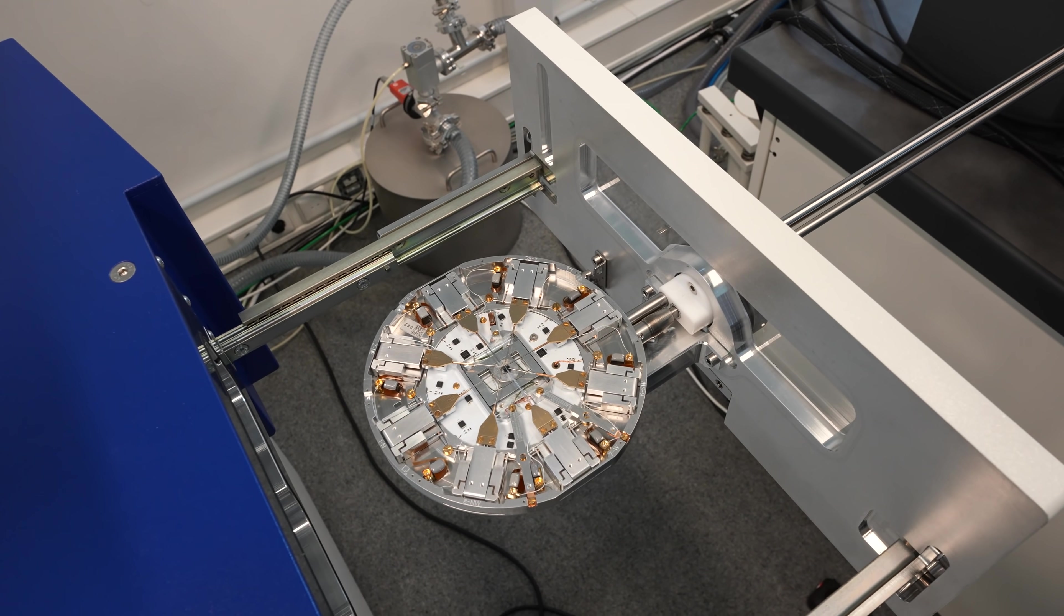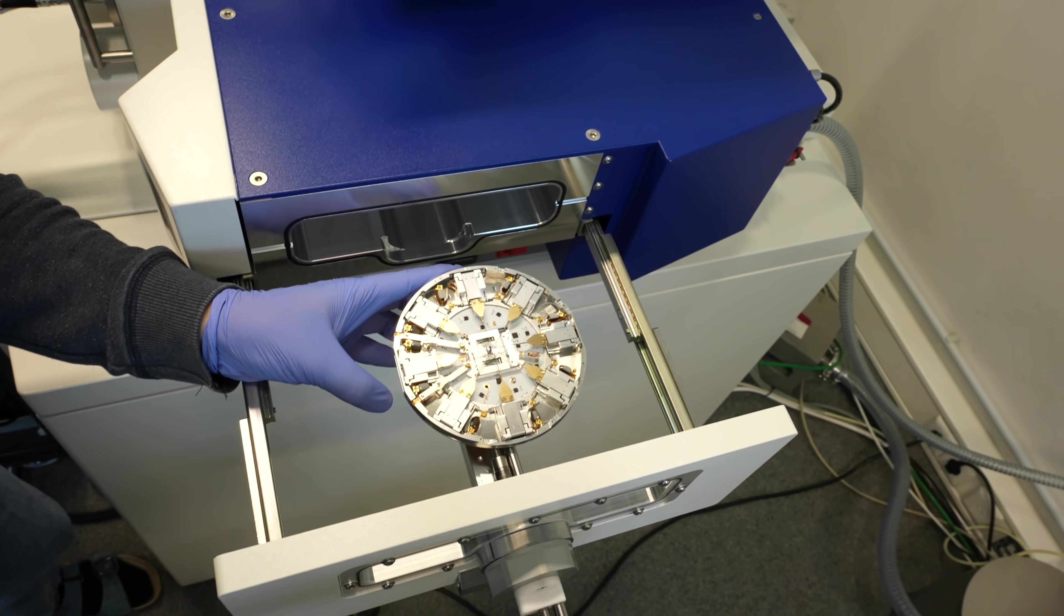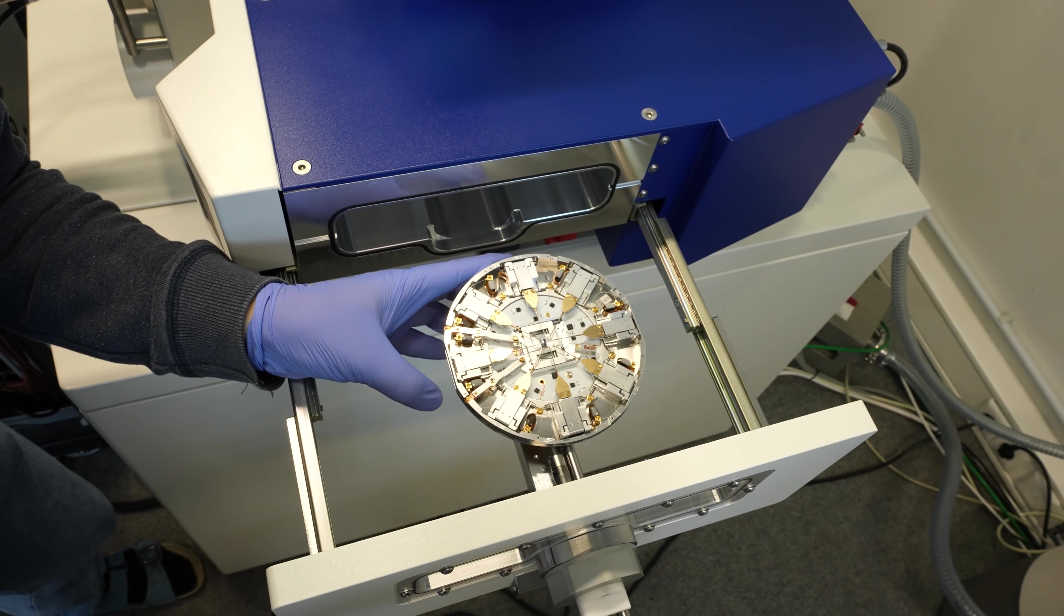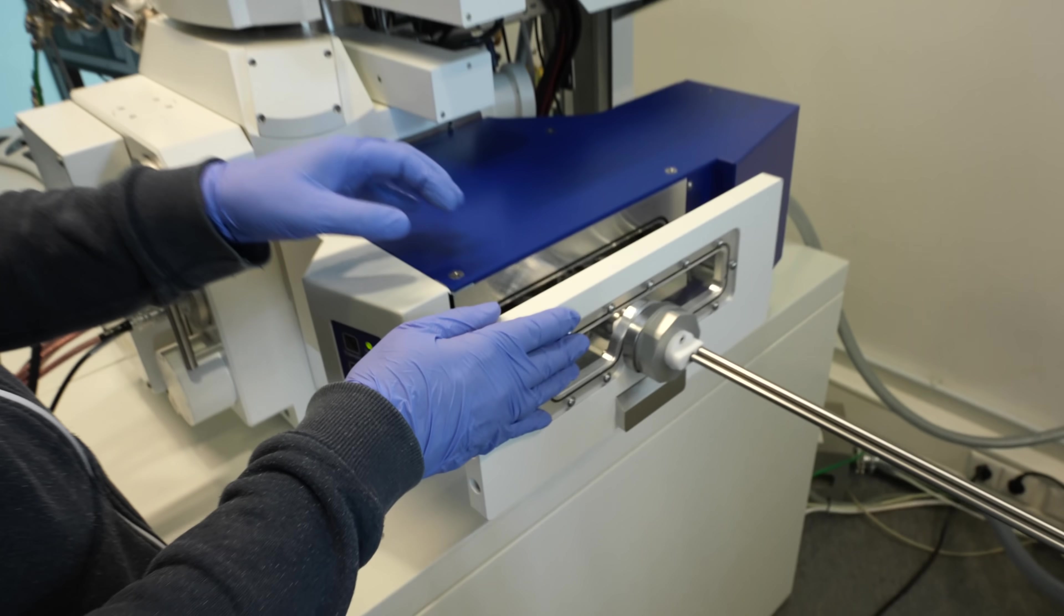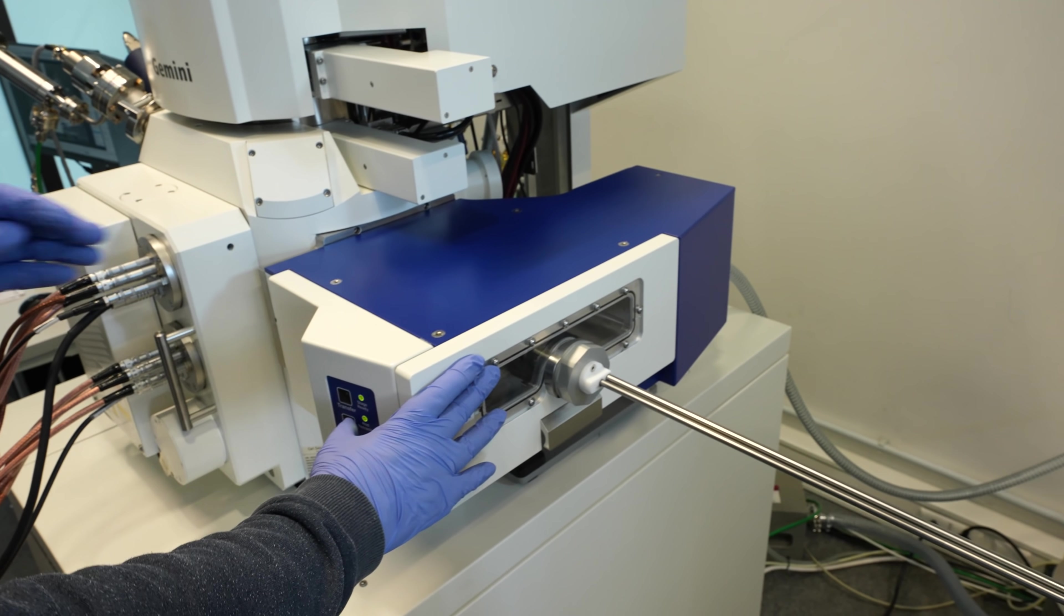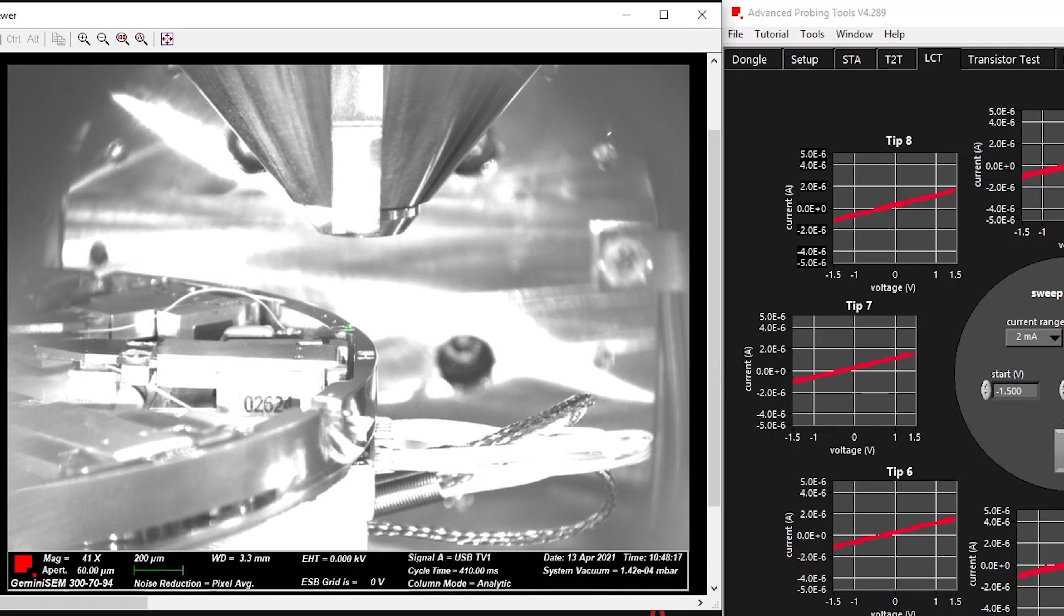After a different probe shuttle has been removed because they used this for different analysis earlier that day, we are entering the probe shuttle with our TSMC 7nm chip. Then the lock is closed and we are waiting for the vacuum to be established. This process can already be monitored using a camera inside the scanning electron microscope.